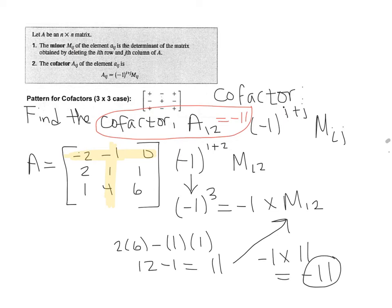So we would do a cofactor expansion along, you know, three of the columns, and we'd use the pattern of the cofactor sign chart. In other words, you don't necessarily have to use this i plus j method, because if you look at it...